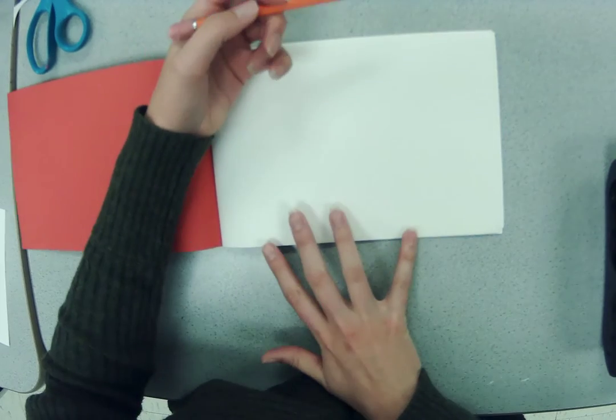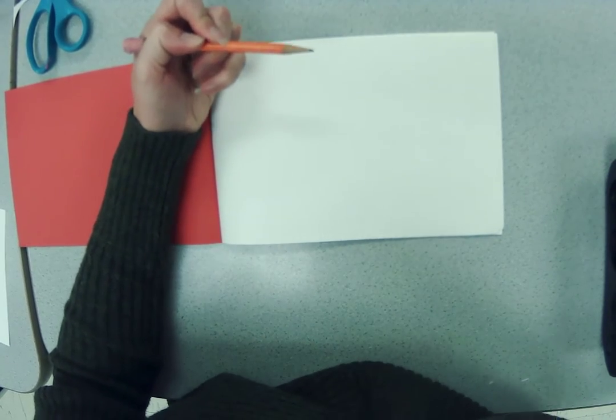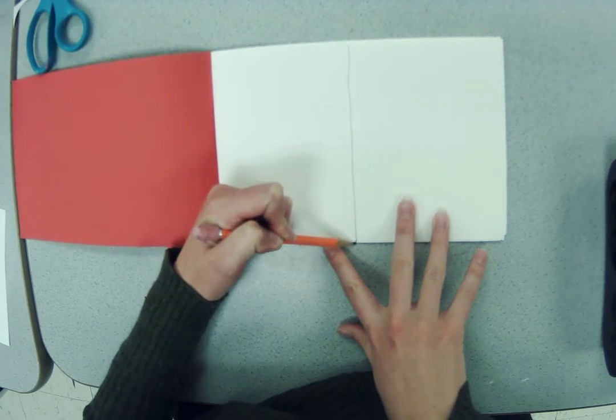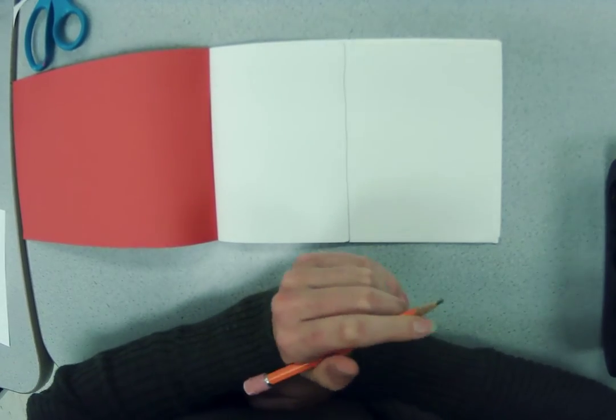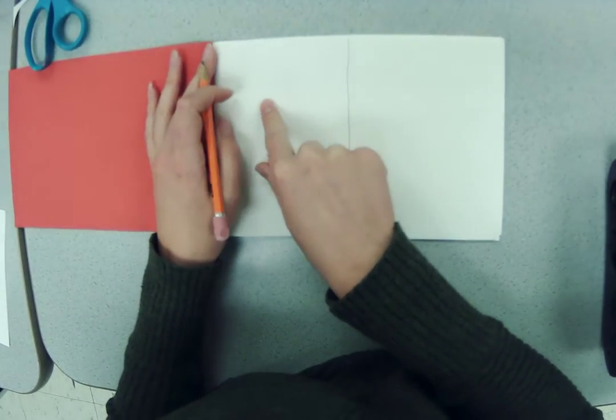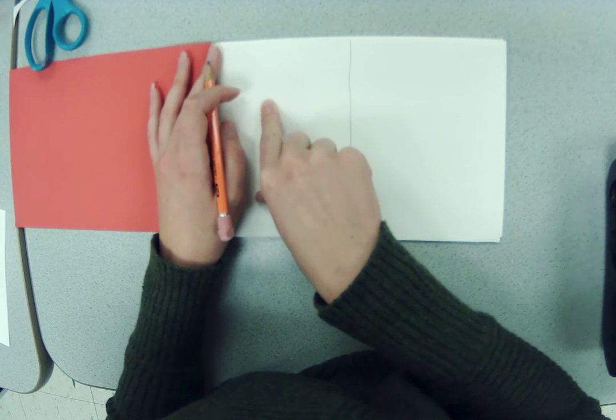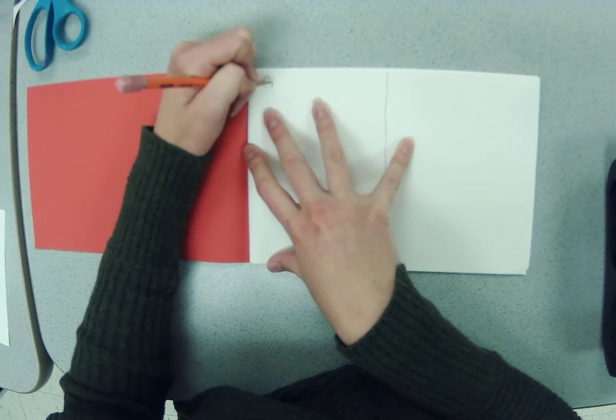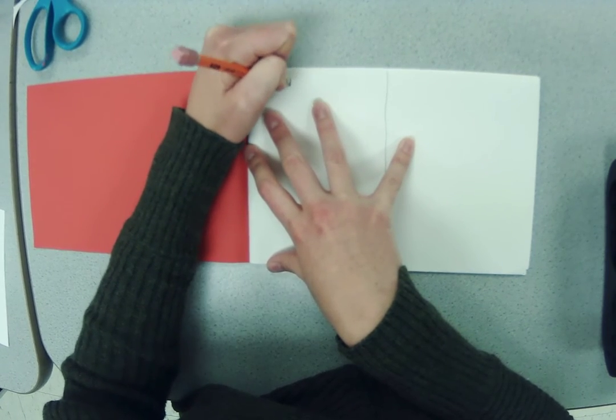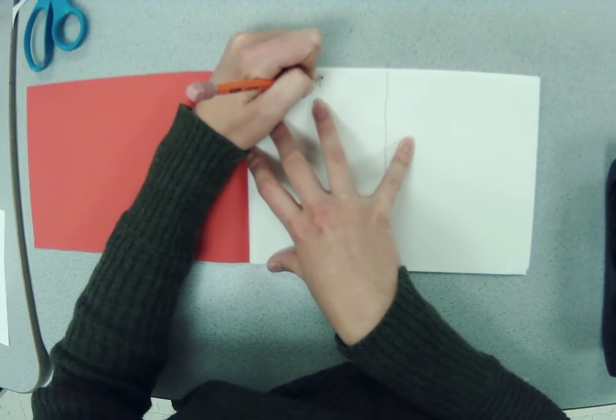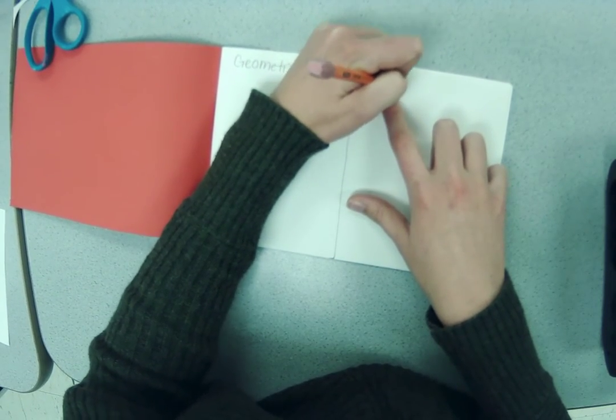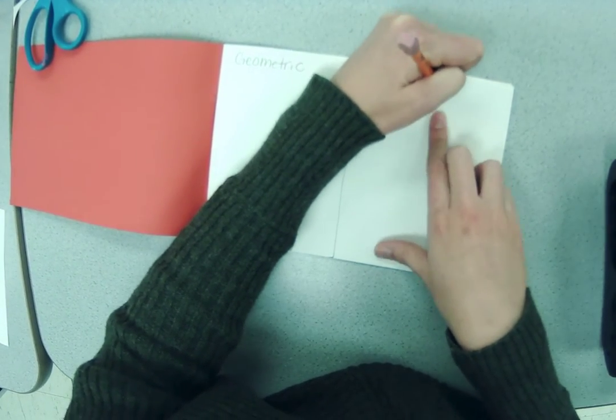So first, let's split our paper into two pieces. I'm going to draw a line down the middle. On this side, I'm going to draw geometric shapes. So I'm going to write that. Here's where I'm going to draw my geometric shapes, and here's where I'm going to draw my free-form shapes.